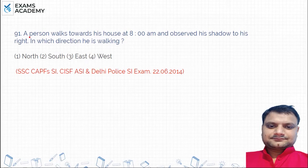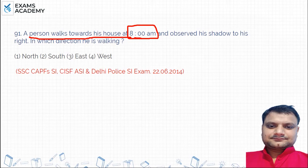The question is: a person walks towards his house at AM — morning time — and observes his shadow to his right. Where is the sun in the morning? The sun is in the east.